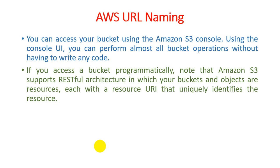You can also access a bucket programmatically. Amazon S3 supports a RESTful architecture in which your bucket and objects are resources, each with a resource URI that uniquely identifies the resource. This is based on the same concepts we discussed in the context of web services, where we have two different files — REST and WSDL. WSDL provides information about where the actual web service is located and what different functionalities are defined.